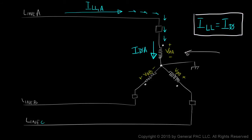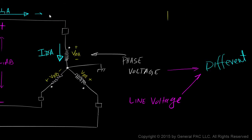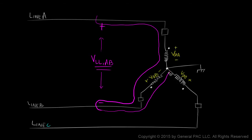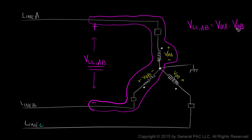We understand that phase voltages are measured across transformer windings while line-to-line voltages are measured across two different lines. For a Y-connected transformer, we can expect the line-to-line voltage to be different than the phase voltage. It's very clear from this illustration that the line-to-line voltage across line A and line B encompasses phase A winding and phase B winding. From our last module, we understood that the line-to-line voltage across line A and line B is equal to phase A voltage minus phase B voltage.